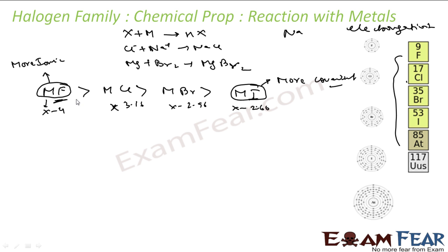So, the conclusion is, when they react with metal, they form a metal halide, but they have ionic character or covalent character. With Fluorine, they have more ionic character, but iodine has less ionic and more covalent character.